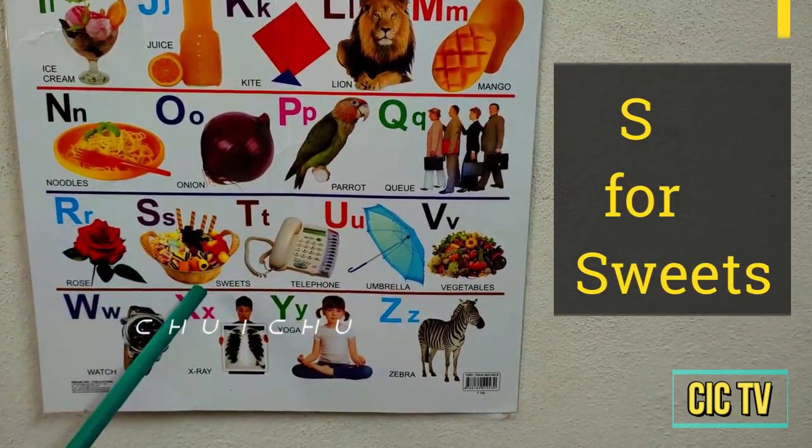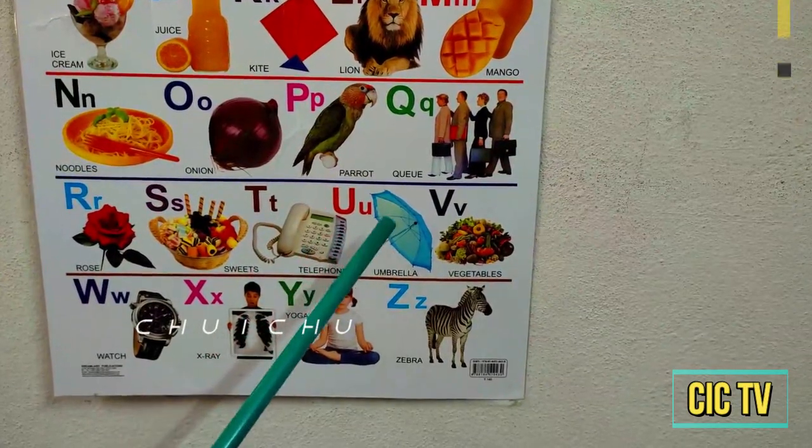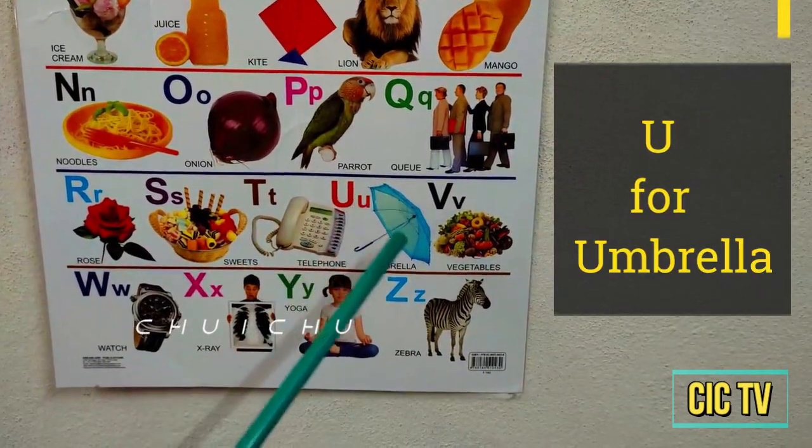S for sweets, T for telephone, U for umbrella.